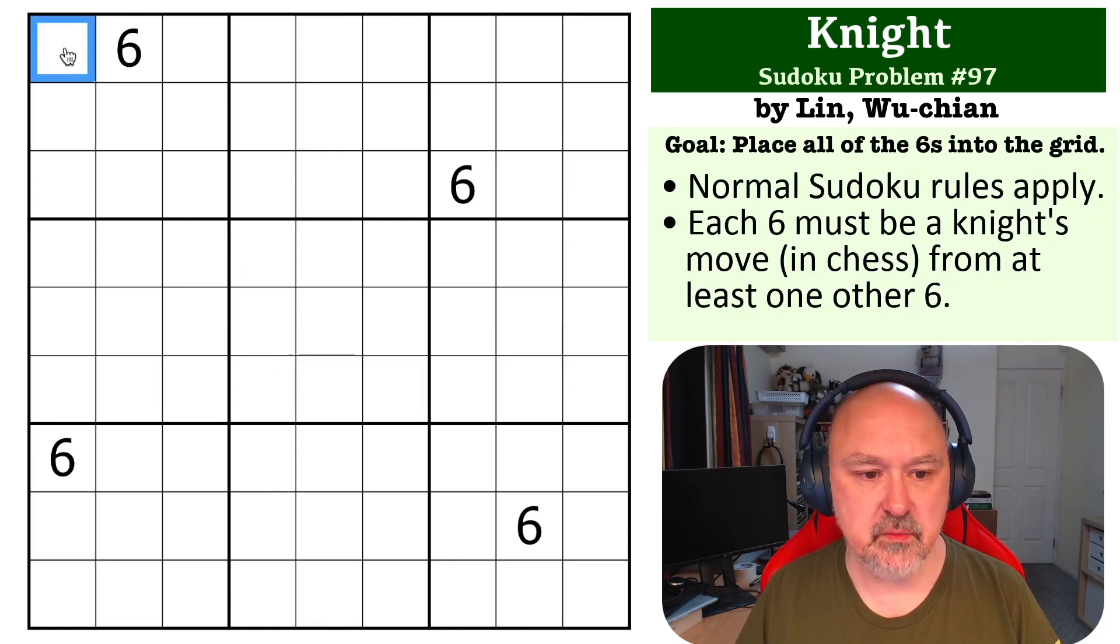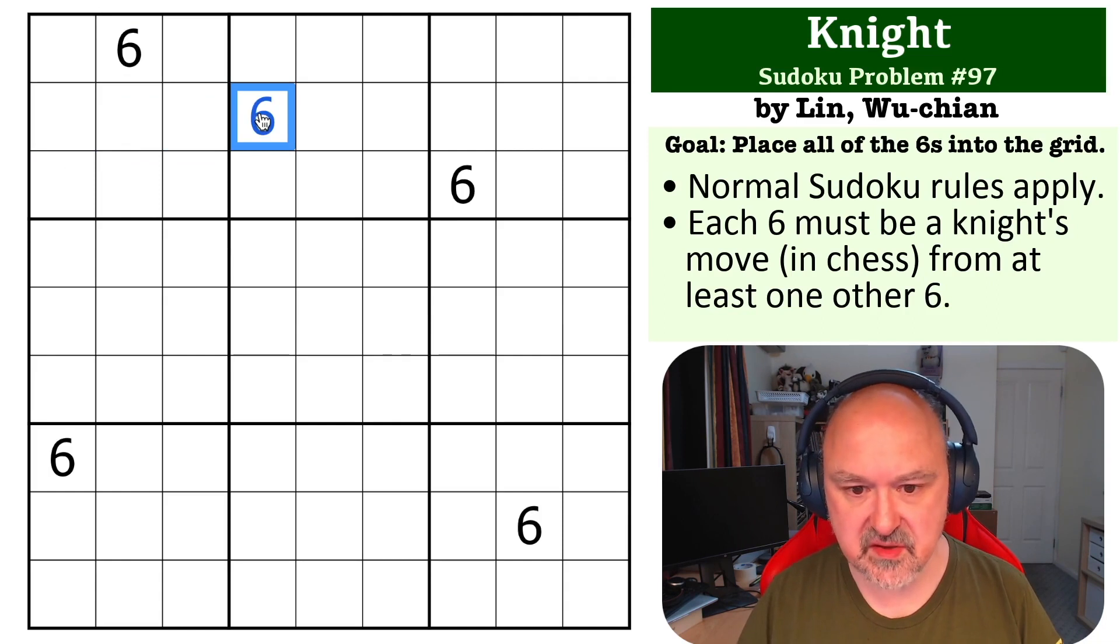Where I started with this one was up in this box. This six can only see three cells by knight's move, which are those three. And it can't be here because it would repeat in the same box. So this becomes a six.